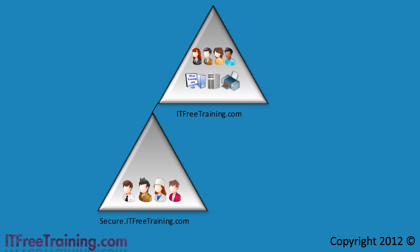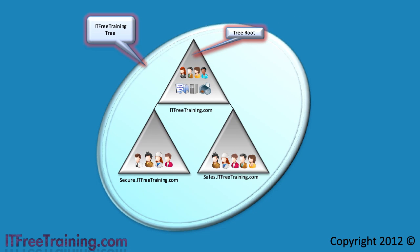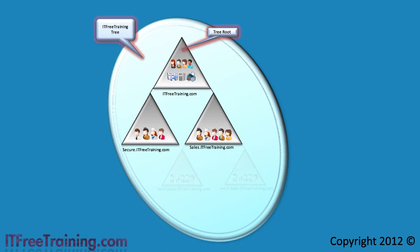When you have two domains like these that share the same root namespace — in this case itfreetraining.com — these are referred to as being in the same tree. IT Free Training is at the top of the tree so it is considered to be the root domain. To illustrate this better you could add yet another domain called sales. As long as sales shares the itfreetraining.com namespace it is part of the tree. Under sales.itfreetraining.com you could even add additional child domains called East and West. All these domains share the IT Free Training namespace and thus are considered to be in the same tree in Active Directory.